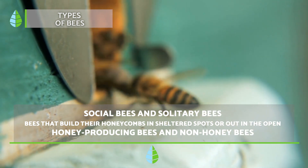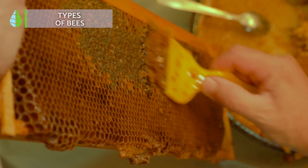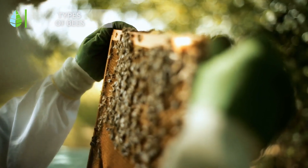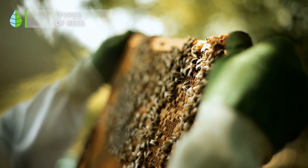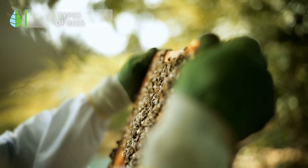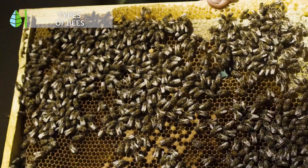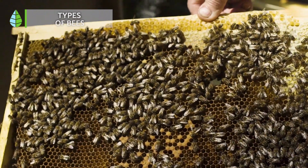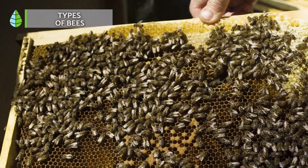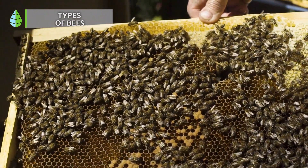In total, it is estimated that there are more than 20,000 species, and only a few have the ability to produce honey. The most emblematic is, without a doubt, the western honeybee.